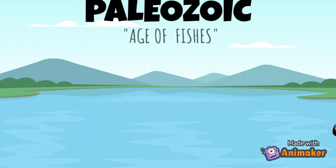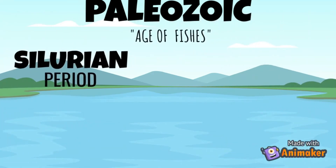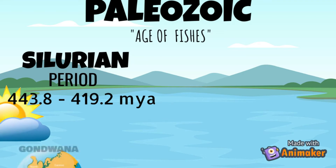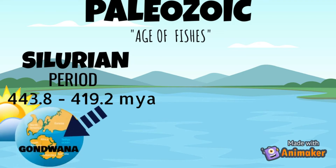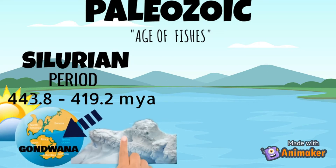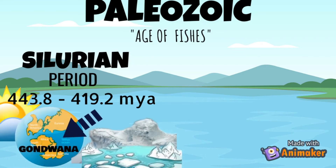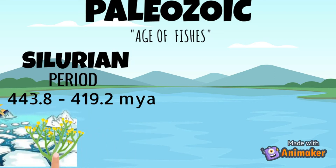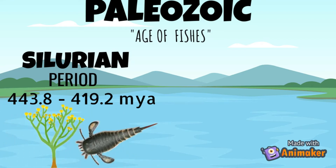The third one is the Silurian period, which was 443.8 to 419.2 million years ago. The Earth's climate remained warm and stable. The supercontinent of Pihuana was still positioned over the South Pole, but the vast ice caps of the late Ordovician period melted almost to nothing. Cook's only erythers were born in this period.